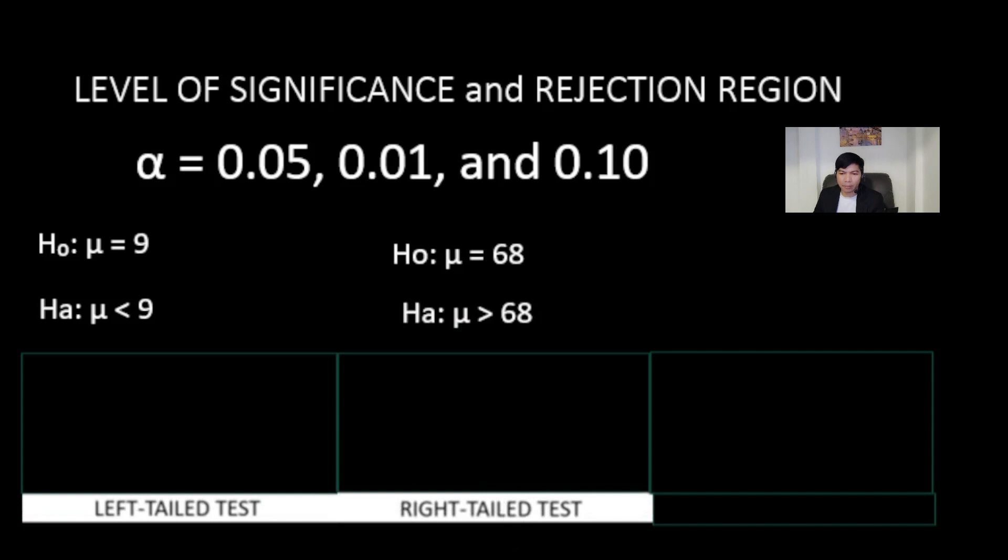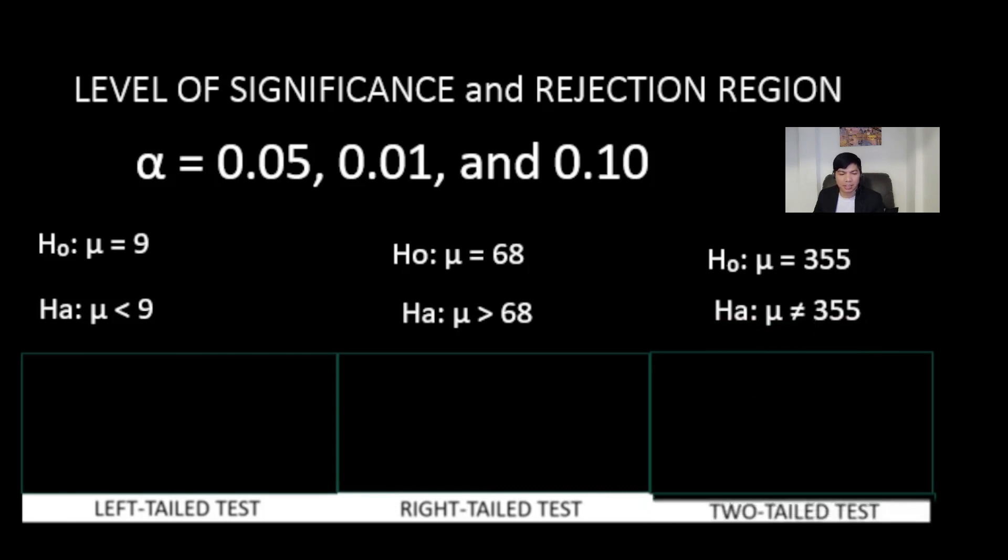Moving to example number three, where the alternative hypothesis says not equal to 355, it could be lower or higher than 355, then a two-tailed test is the way to go.